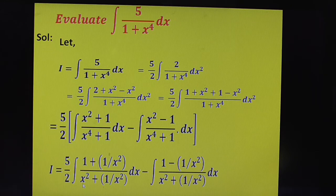This x square plus 1 by x square can be written as x minus 1 by x whole square. If the numerator is plus, use denominator as x minus 1 by x. If numerator is 1 minus 1 by x square, write denominator as x plus 1 by x whole square.